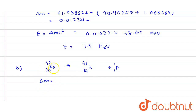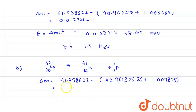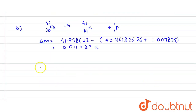Again we find delta m as the difference between the masses of reactants and products. The mass of Ca-42 is 41.958622 u, minus the mass of K-41 which is 40.961825 u, minus the mass of the proton which is 1.007825 u. Solving this, delta m is approximately 0.011033 u.